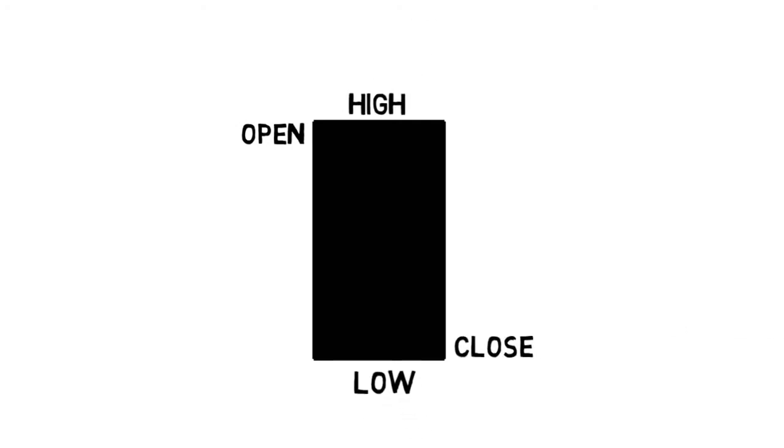As soon as the session started, bulls were in charge. They were driving the price up for the whole session and it closed at its high. Bearish Marubozu open price is equal to the session's high and closing price is also the session's low. The same as the Bullish version of the candlestick, this also has no shadows, indicating that sellers had control over the price action the whole session. Just as soon as the session started, bears pushed the price lower. They drove the price down till the end of the session, where it closed at its low.